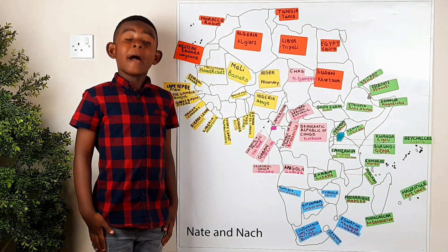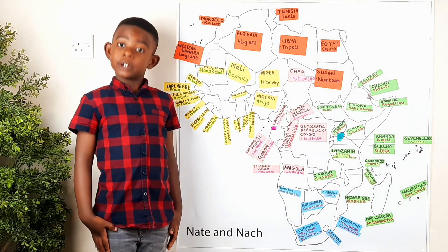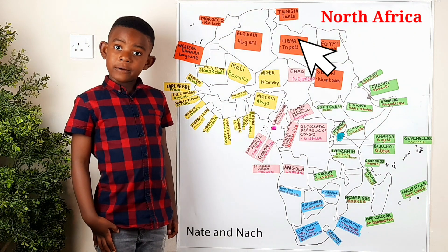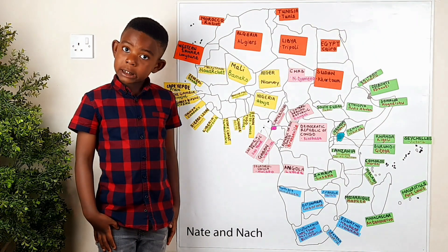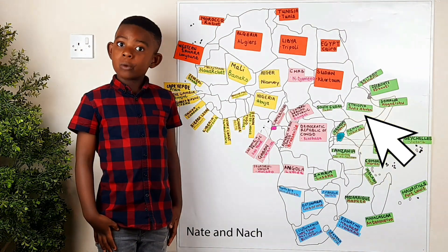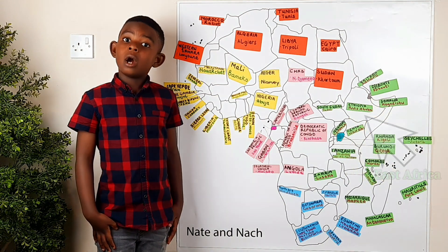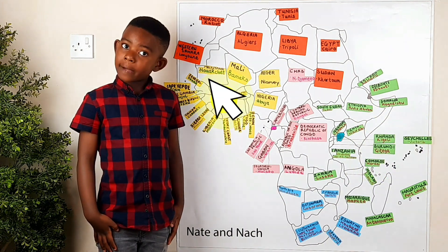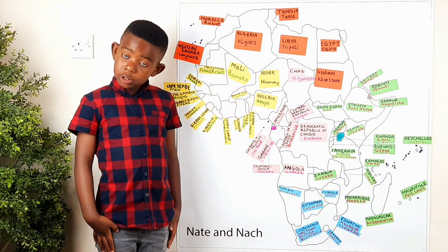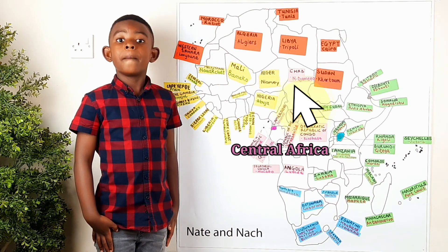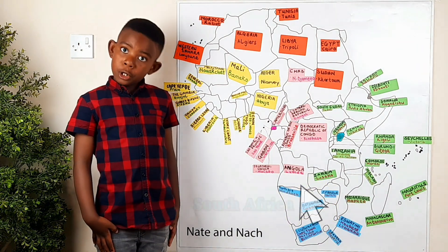Remember, Africa is divided into North Africa which is labelled in red, East Africa which is labelled in green, West Africa which is labelled in yellow, Central Africa pink, and South Africa blue.